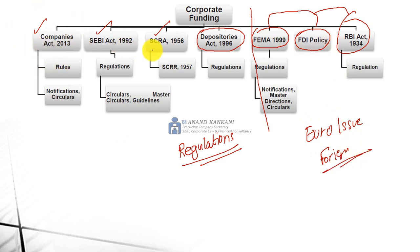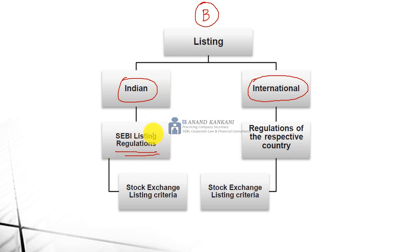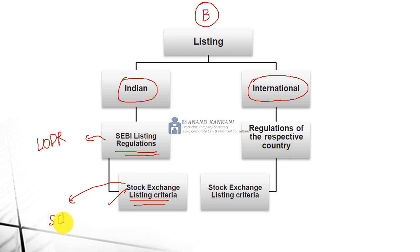Otherwise, the basics are the Companies Act and SCRA — these are the basic regulations you are going to cover in case of corporate funding. Then this is Part B of the chapter, where we talk about the listing of the securities. In listing of the securities, you can list the securities in India or list the securities abroad. When we list in India, we have SEBI as the regulator and we have the stock exchanges where we have the different listing criteria. You will have LODR regulations for listing, and we will have the SCRA governing here. For the international issue, different stock exchanges have different criteria and we are going to cover that as well.